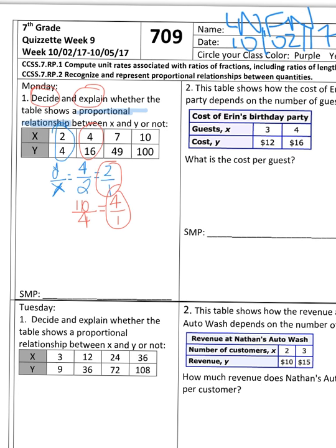And for something to have a proportional relationship, they all have to have the same equivalent ratio. So when you reduce all the ratios, they have to be equal to the same number. If this was a proportional relationship, you would have to have 2 over 1 for each of the ratios.